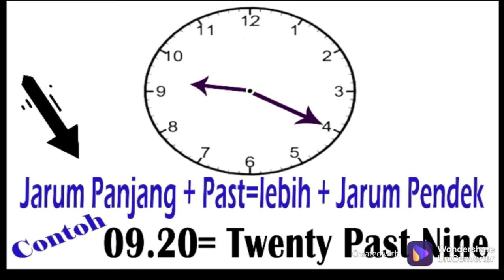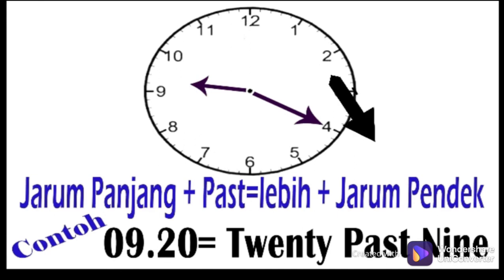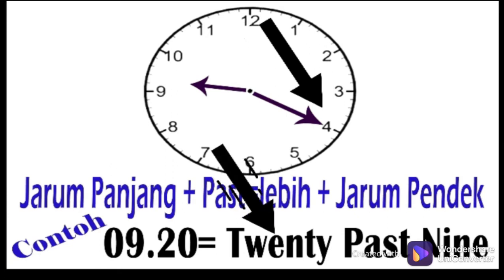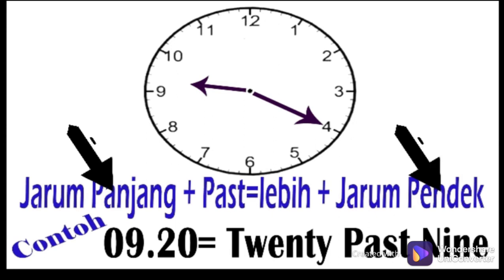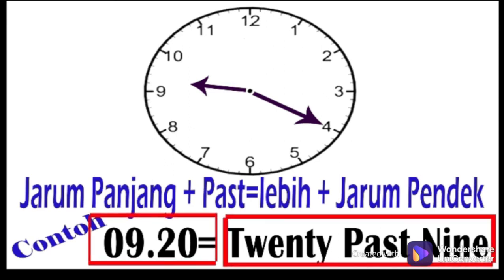Dibalik bagaimana? Sebutkan jarum panjang dulu, tambah kata 'past' yang artinya lebih, kemudian sebutkan jarum pendeknya. Jadi, ketika kita hendak menyebutkan pukul 9 lebih 20 menit dalam bahasa Inggris, kita ketahui dulu mana jarum panjangnya, yaitu 20. Tambahkan kata 'past' yang artinya lebih, kemudian sebutkan jarum pendeknya, yaitu 9. Sehingga, pukul 9 lebih 20 menit dalam bahasa Inggris berbunyi '20 past 9'.